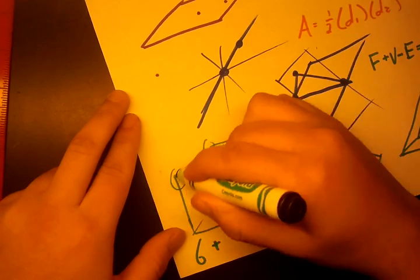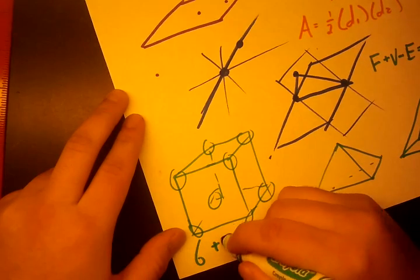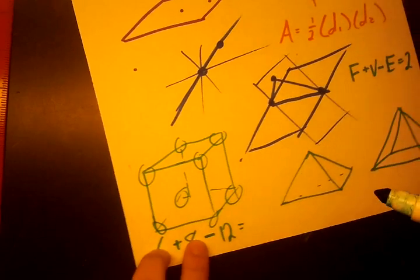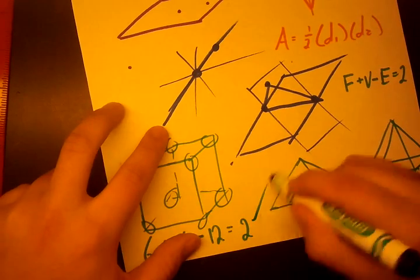Counting the vertices: 1, 2, 3, 4, 5, 6, 7, 8. Plus 8 minus edges. How many edges? 12. And 14 minus 12 is 2. So check, that works.